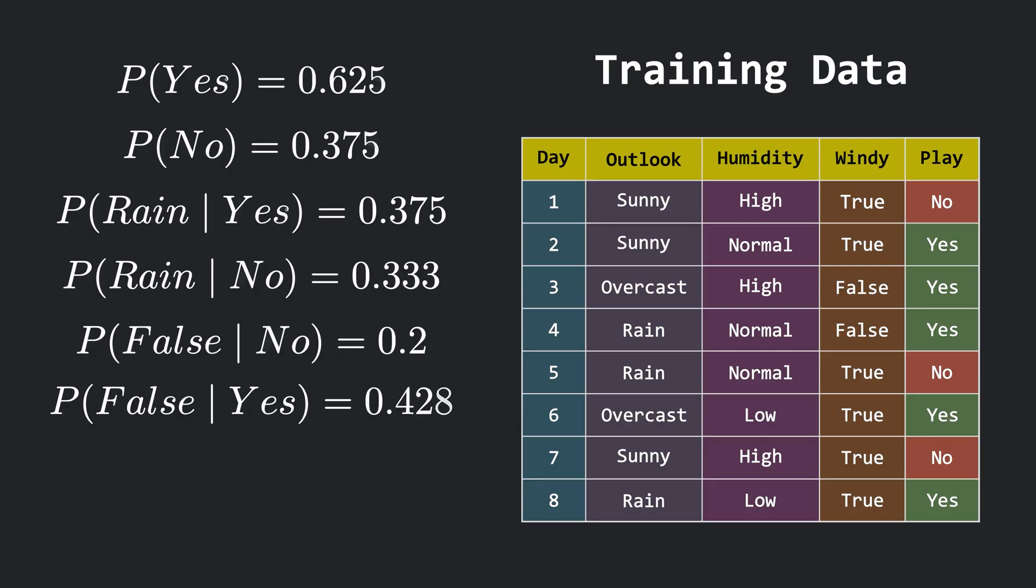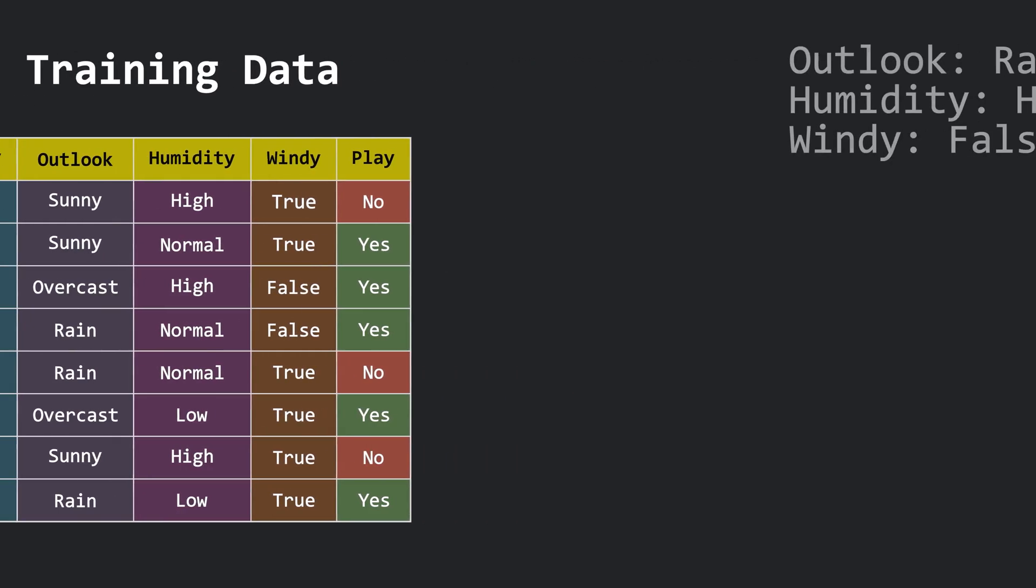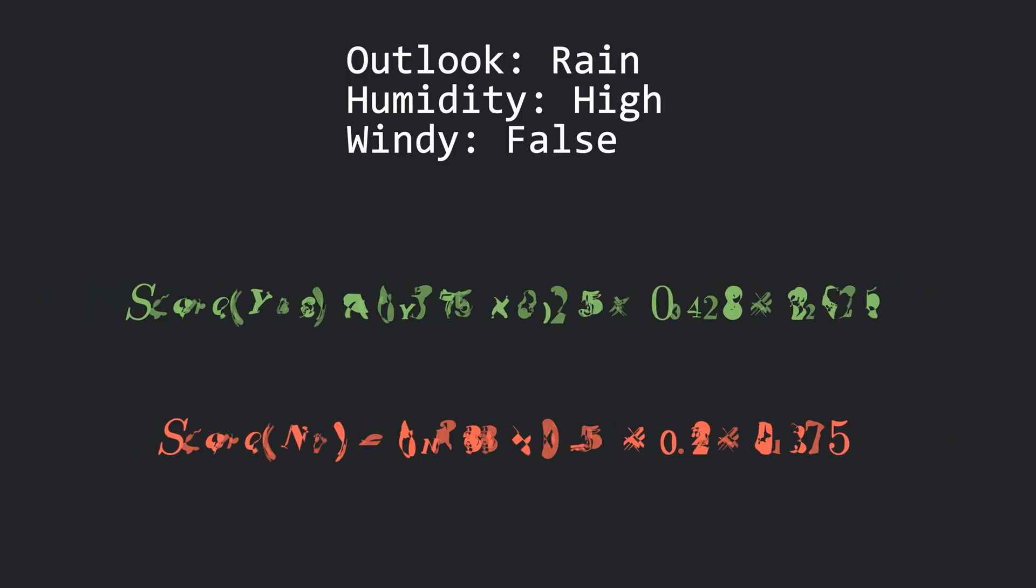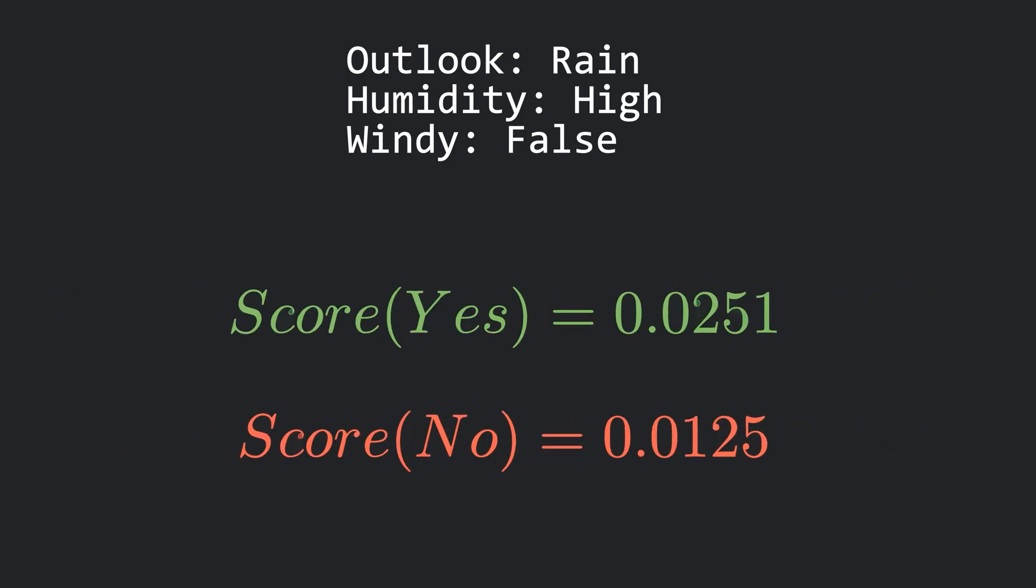And similarly, compute all the other values. You should get these. Now if we plug these in, the score will not collapse to 0. And in this case, the game should be played.